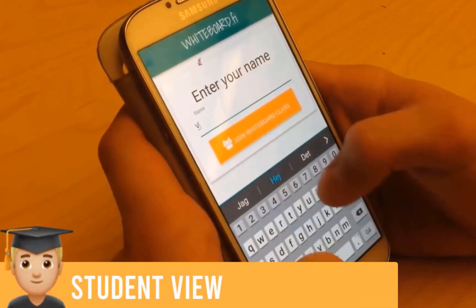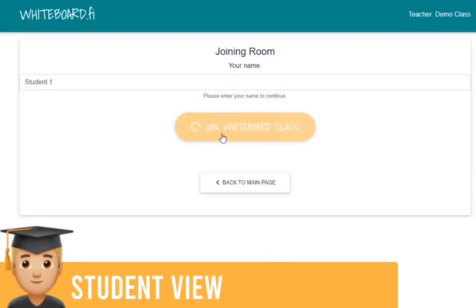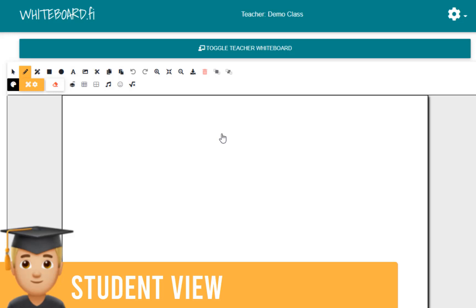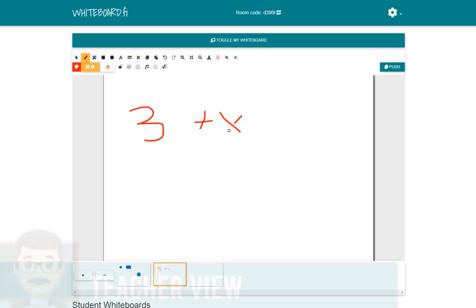All students have to do to join is click that link, enter their name, and they'll be added to your class. Once they're added, they'll be able to see your whiteboard and they'll also have their own whiteboard as well.